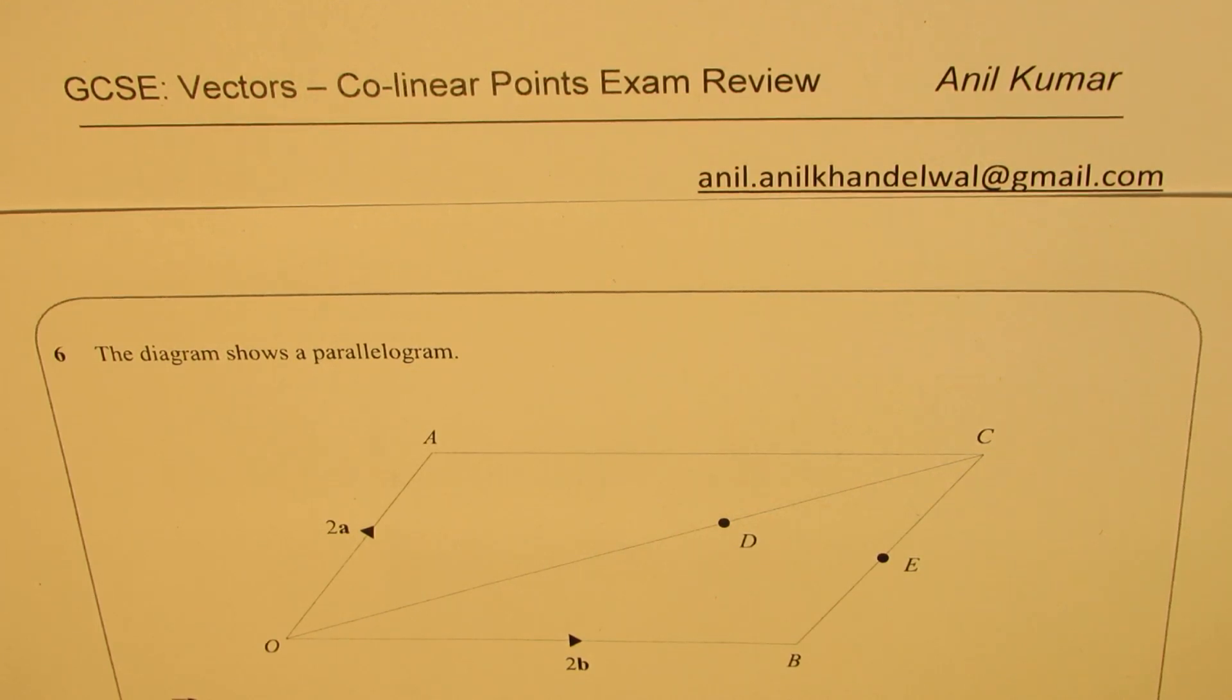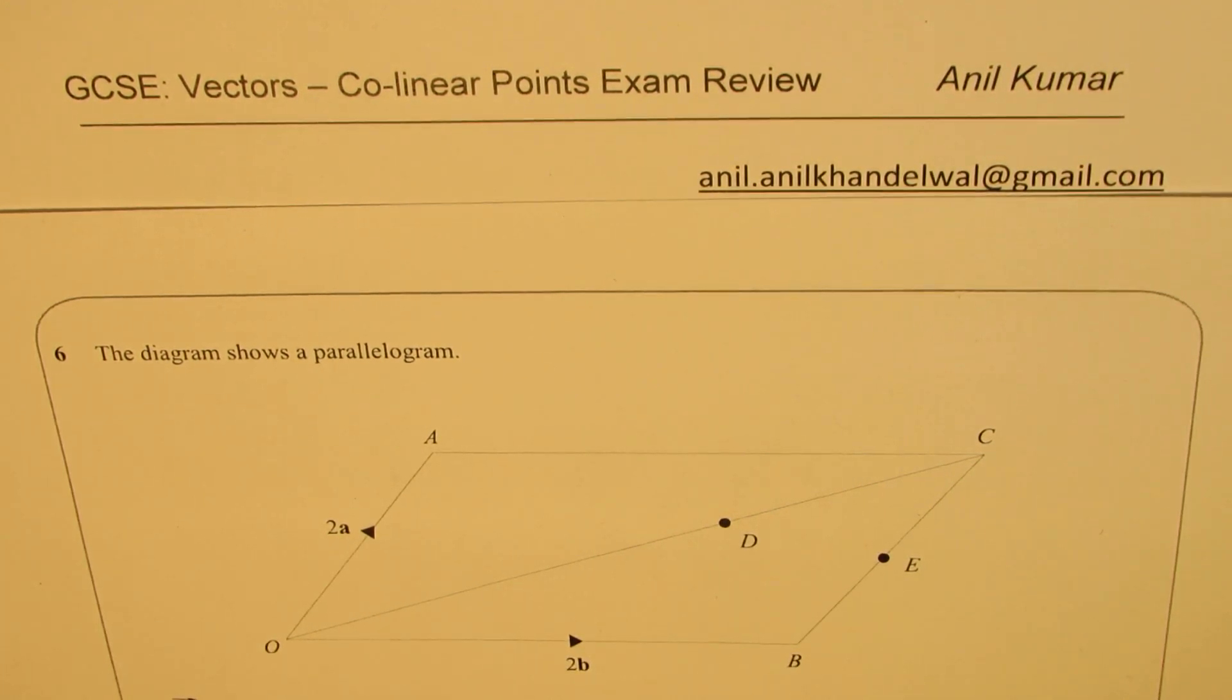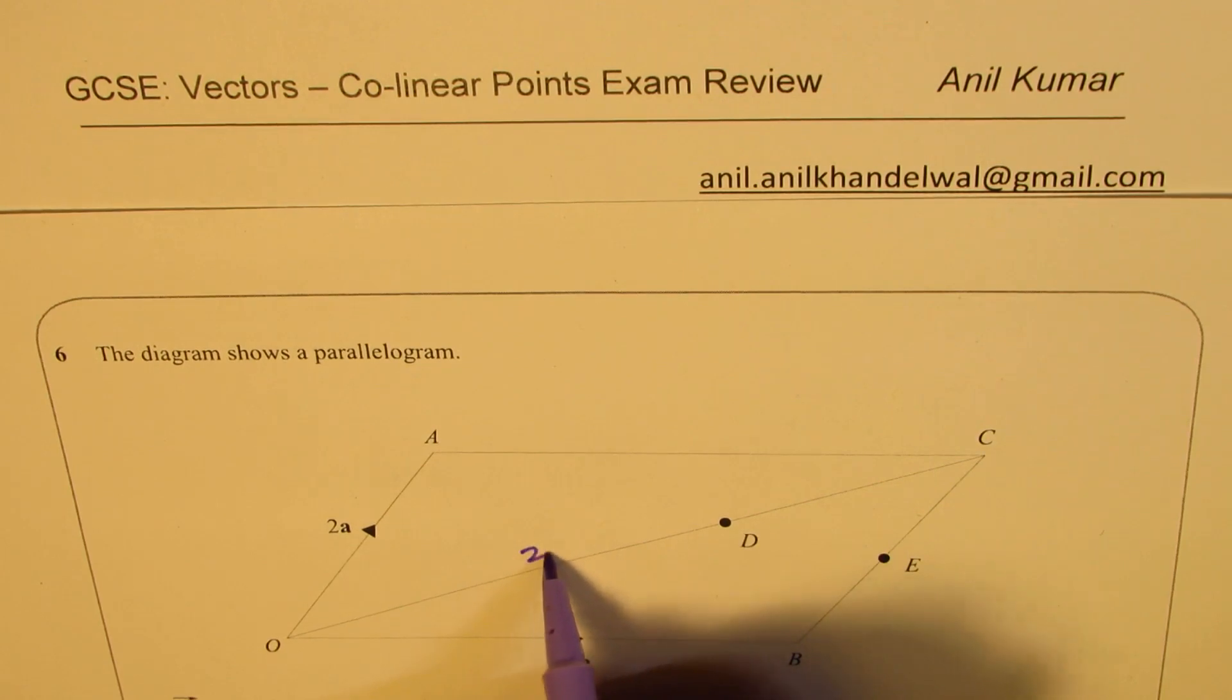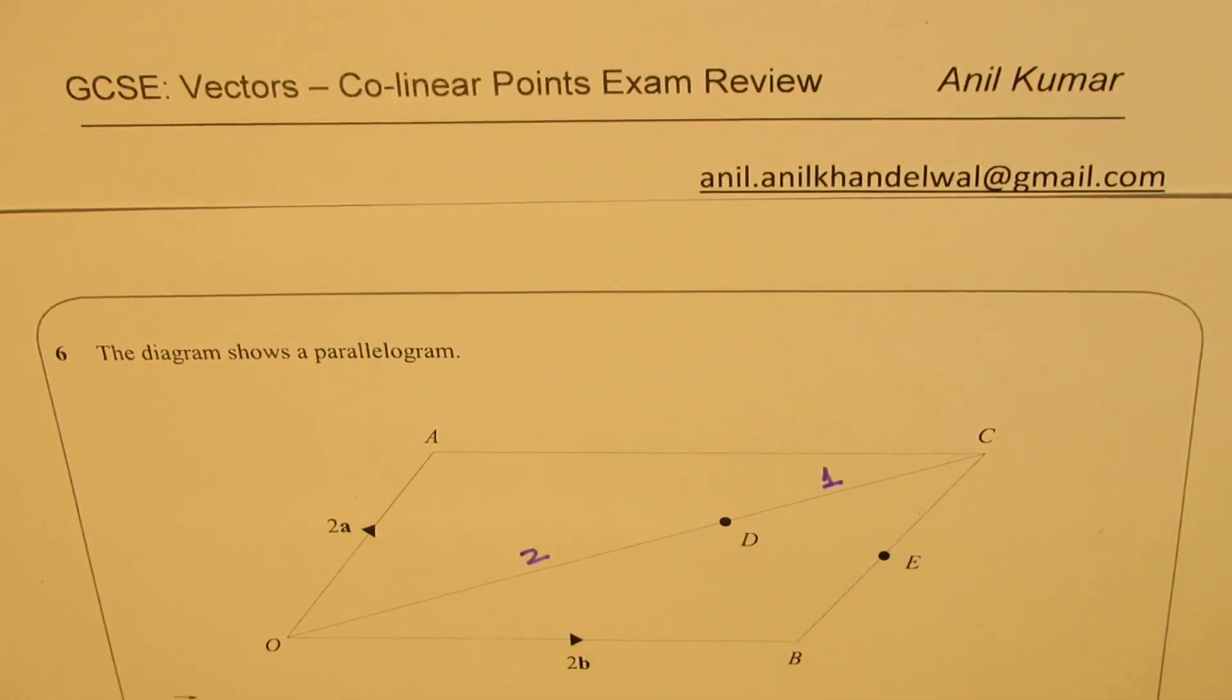The diagram shows a parallelogram. OA is equal to 2A, OB is 2B, D is a point on OC such that OD to DC is 2 to 1. So this ratio is given to us as 2 to 1. E is the midpoint of BC. These two sides are equal.